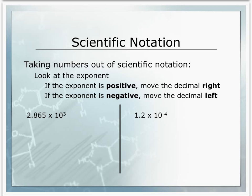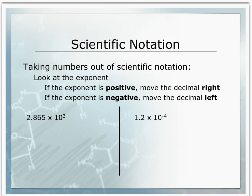Let's try the first example: 2.865 times 10 to the third. This is a positive exponent, so we must be dealing with a number that is greater than 10. To make 2.865 greater than 10, we need to move our decimal to the right. We're going to move it three times: 1, 2, 3. Our decimal place is now after the 5, giving us 2,865. Double check — if you moved it in the right direction, your number should be greater than 10 because your exponent is positive. 2,865 is much larger than 10.